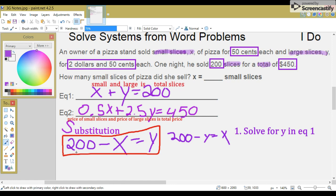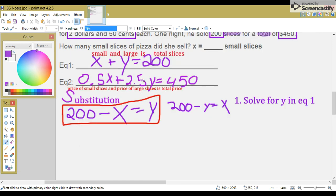The next step, wherever you see a Y in the second equation, we're going to substitute it with this expression, 200 minus X. So, we have 0.5X plus 2.5 parenthesis 200 minus X equals 450.